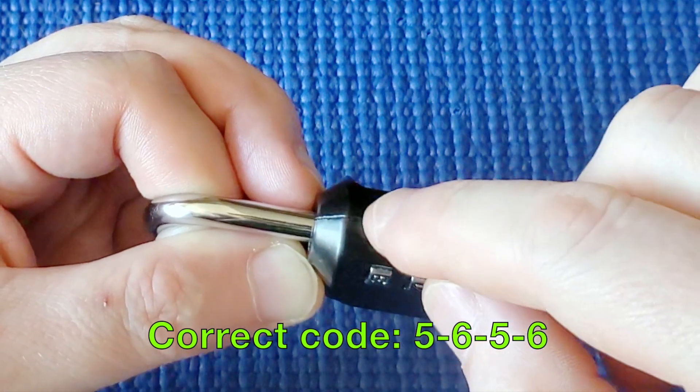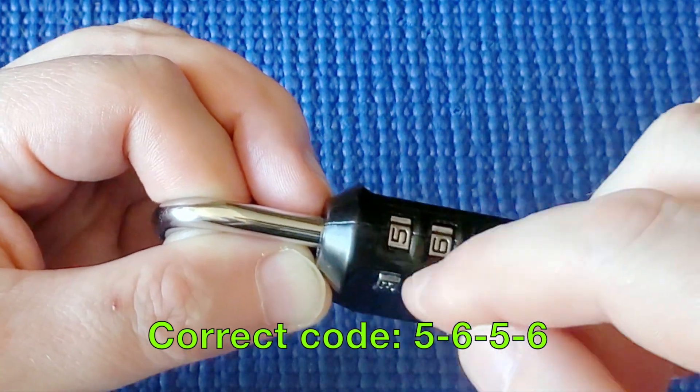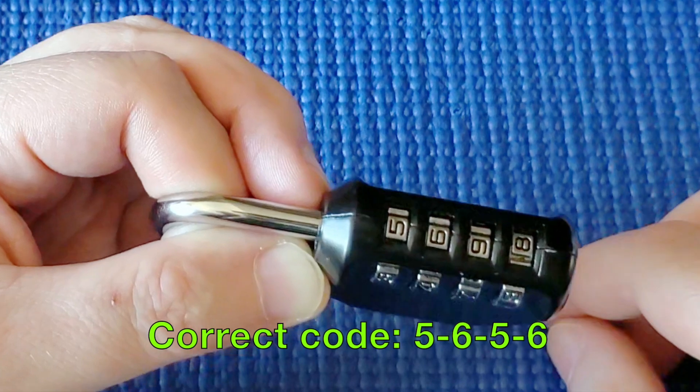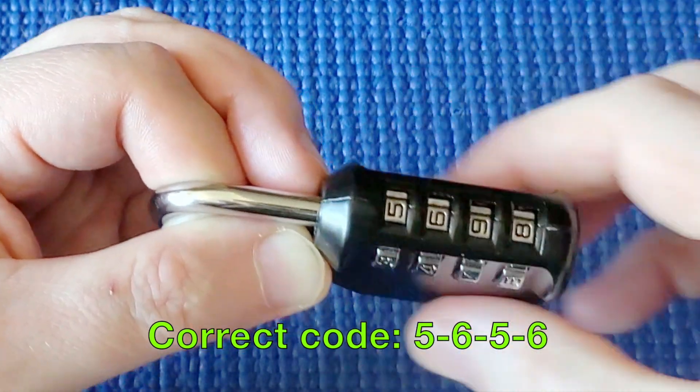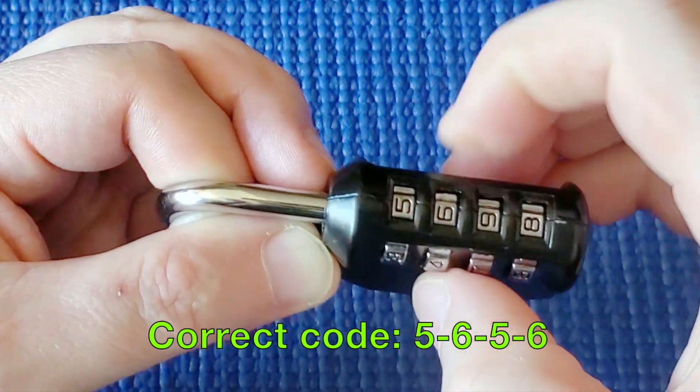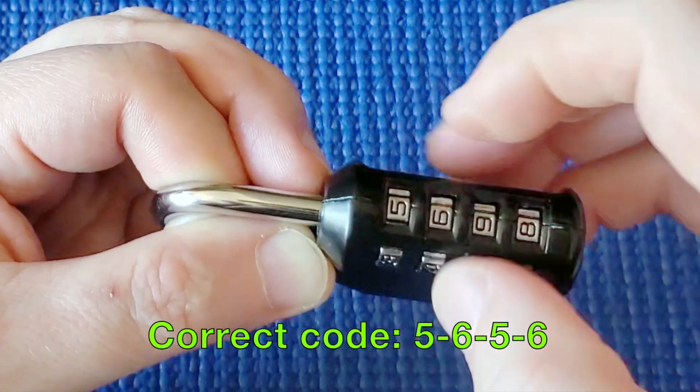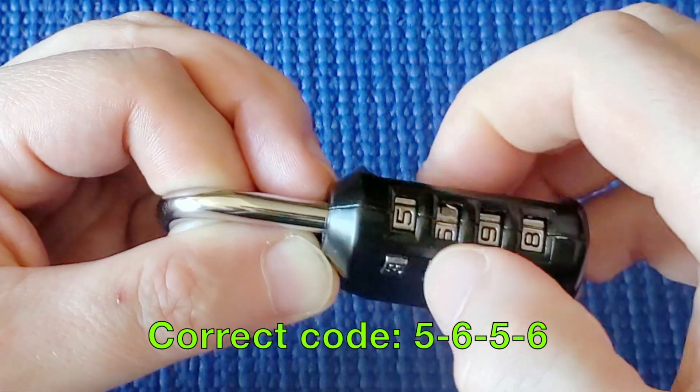Another thing is there are no false gates. This is the only one that clicked. That's another sign that this is a cheap lock. I'm going to go to the second wheel now that I'm confident five is the correct number.